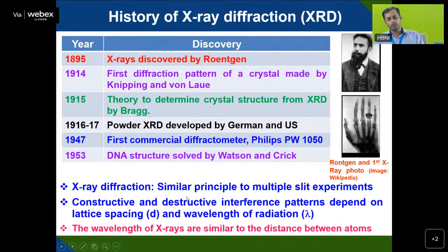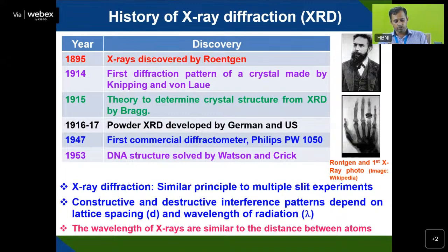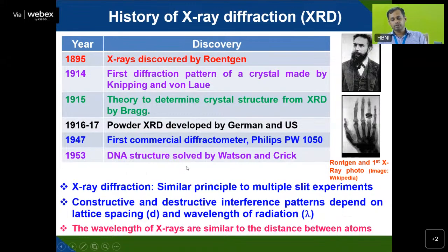X-ray diffraction is based on a similar principle to multiple-slit diffraction. Constructive and destructive interference patterns depend on the lattice spacing D between planes in the solid, as well as the wavelength of radiation λ. These two parameters mainly determine the outcome. The wavelength of X-rays is similar to the distance between atoms, which is why X-rays are used to see crystal structures at atomic resolution.